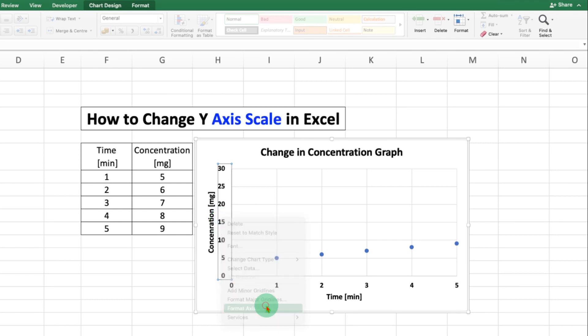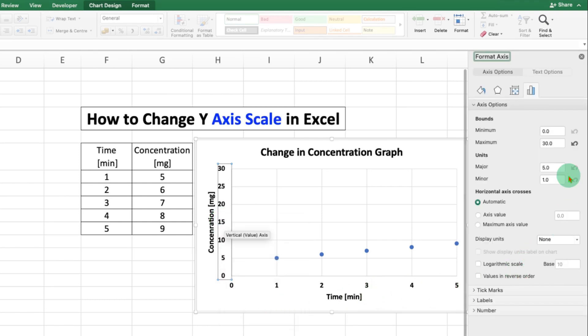You will see the format axis pane. Under the bounds you will see two values: minimum and maximum. If you want to start the minimum value from 0, that's okay, or you can start it from 2 for example.